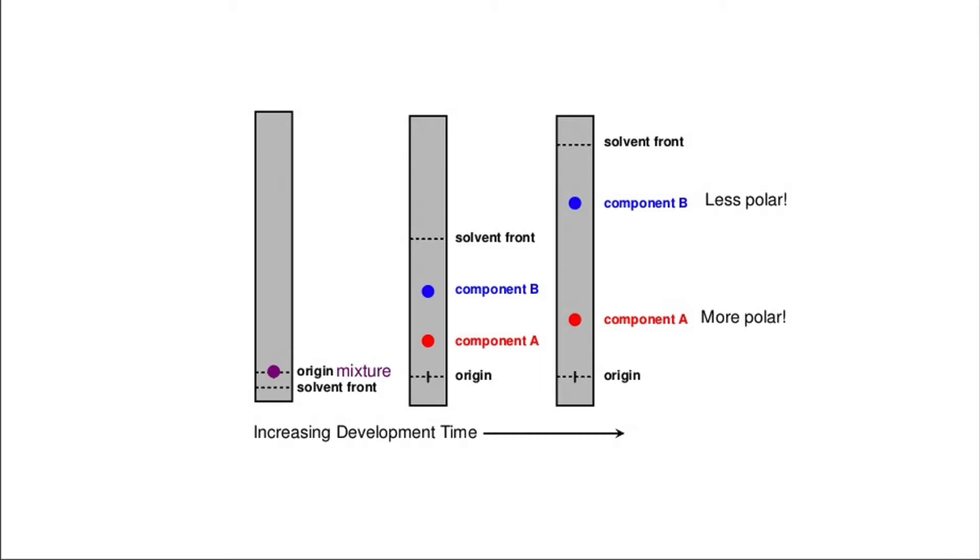The separation relies on the relative affinity of compounds towards both phases. The compounds in the solvent, which is the mobile phase, move over the surface of the thin layer, which is the stationary phase. The movement occurs such that compounds with higher affinity to the stationary phase move slowly, while other compounds travel fast.